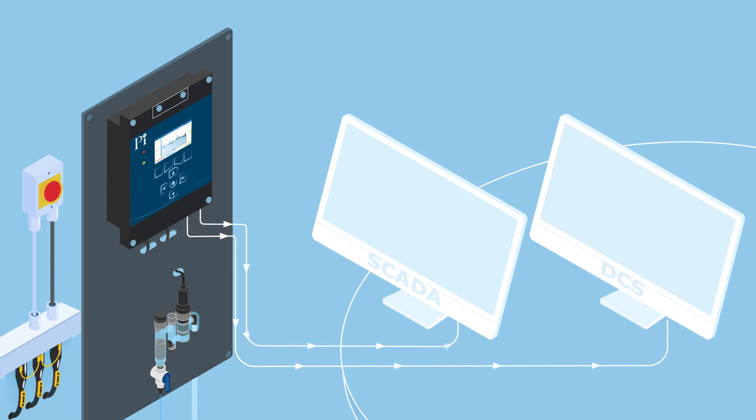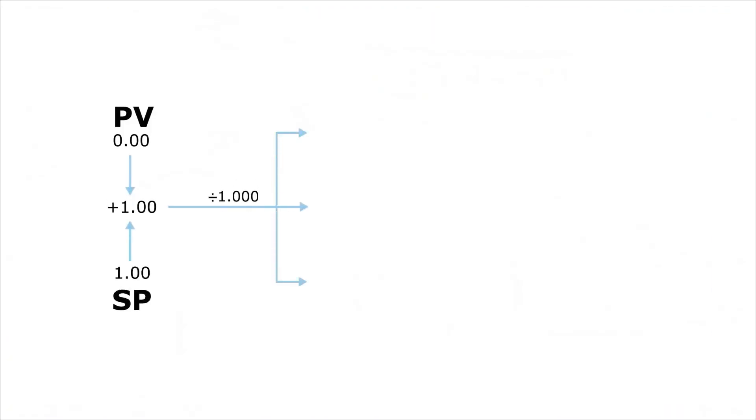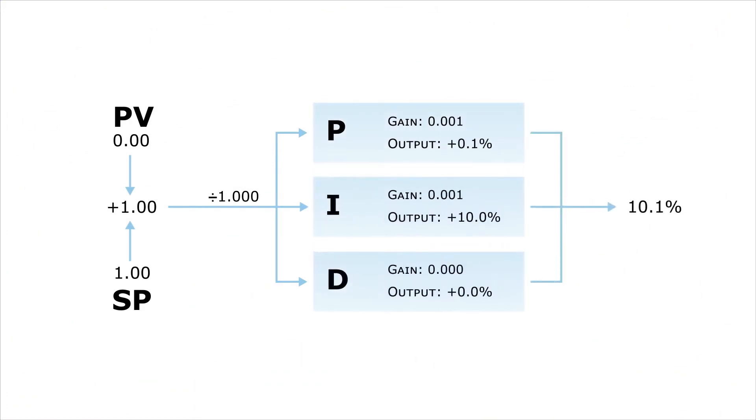As the HaloSense sensor measures the chlorine, Cryos can also control it by using its onboard P, PI and PID functions.